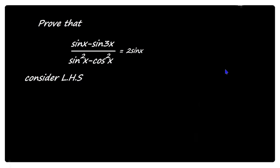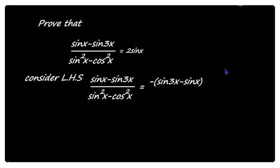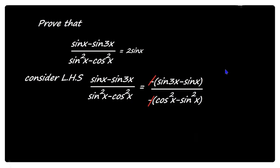We consider the LHS: sin x minus sin 3x divided by sin squared x minus cos squared x. Taking minus common in the numerator gives minus of (sin 3x minus sin x), and in the denominator minus of (cos squared x minus sin squared x). The negatives cancel, leaving sin 3x minus sin x divided by cos squared x minus sin squared x.